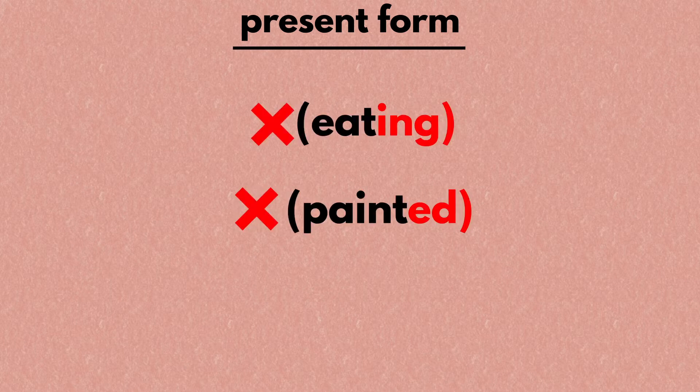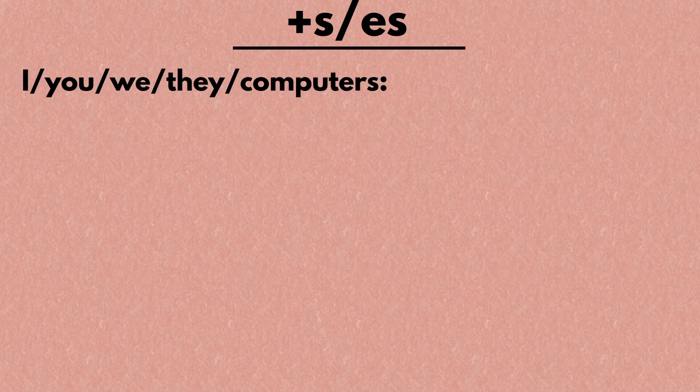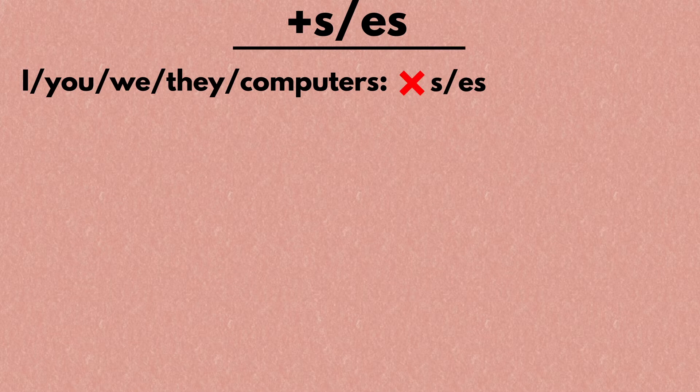The simple present tense uses the present form of verbs, which is the form without endings such as -ing, -ed, or -en. However, depending on the subject, you sometimes need to add an -s or -es after the verb. If your subject is I, you, we, they, or something plural like 'computers,' you leave the verb alone — as in 'I love cheesecakes.'